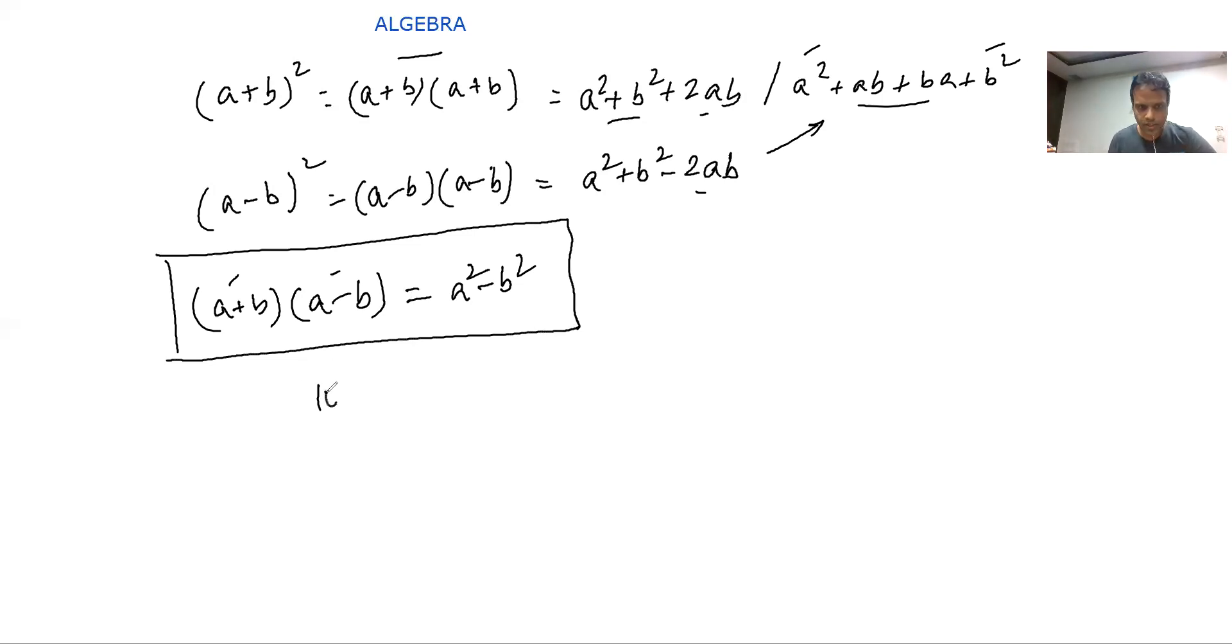For example, if I have to solve 102 × 98, can I use this expression? Yes, I can. How? 102 can be written as 100+2, and 98 can be written as 100-2. Isn't this very similar looking? a and b, a+b, a-b. What the formula says is a² - b². So this will become 100² - 2², which is nothing but 10,000 - 4, which is 9996. So a multiplication which was looking complex can in two steps be written like this.